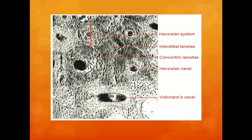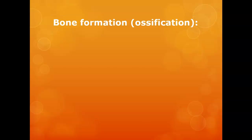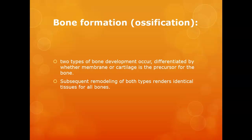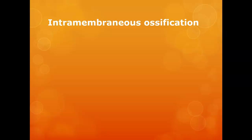Now, how are bones produced? There are two ways: formation between membranes, or formation from a cartilage model. Either way the bone is made, it will remodel so that all bone tissue looks like bone tissue.